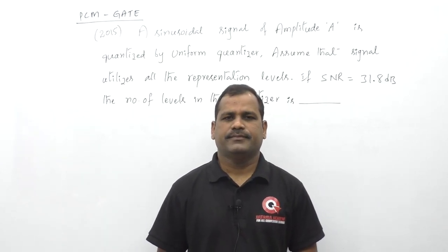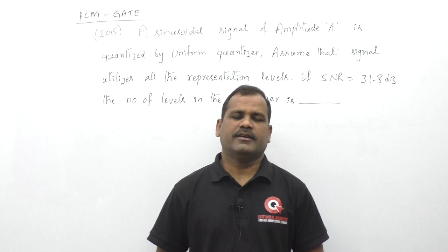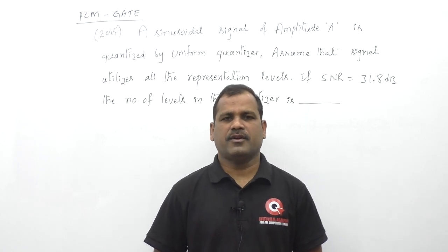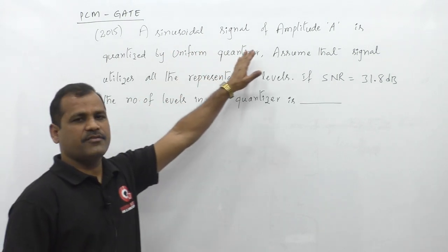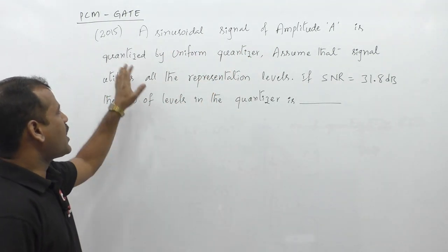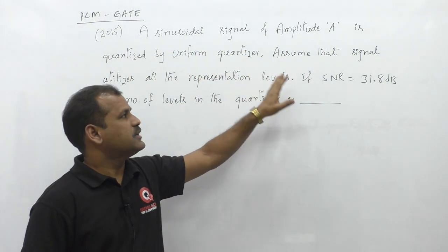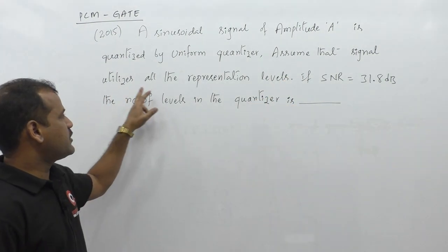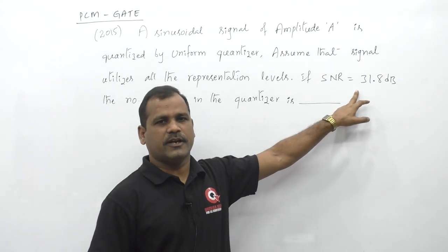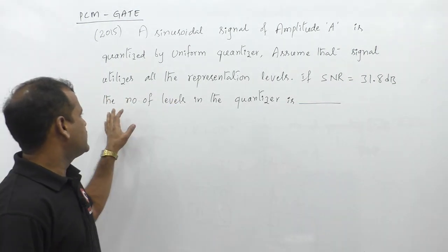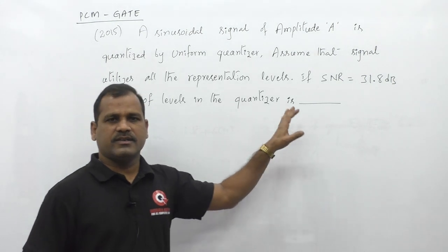Let us consider a GATE 2015 question from the PCM topic. Here, a sinusoidal signal of amplitude A is quantized by a uniform quantizer. Assuming that the signal utilizes all the representation levels and the signal to noise ratio is equal to 31.8 decibels, the number of quantization levels in the quantizer is...